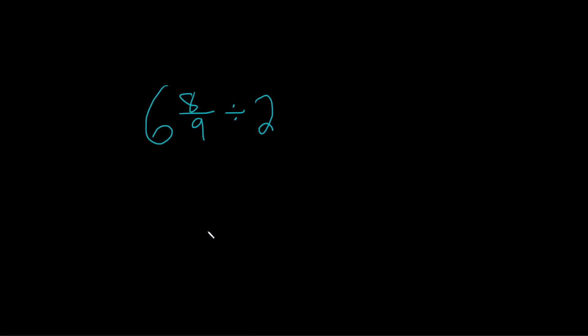Divide the following numbers: 6 and 8 ninths divided by 2. The first step is to turn these into fractions. This here is a mixed number. To turn it into a fraction, we multiply the 9 times the 6, and then we add that to 8.